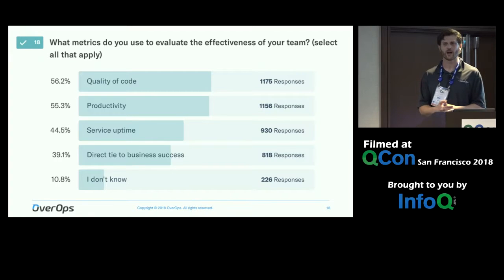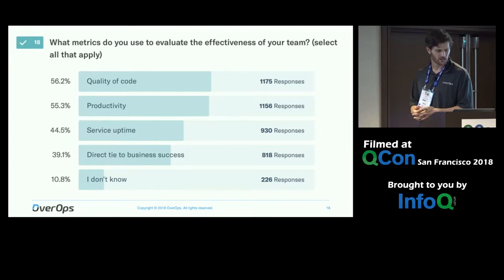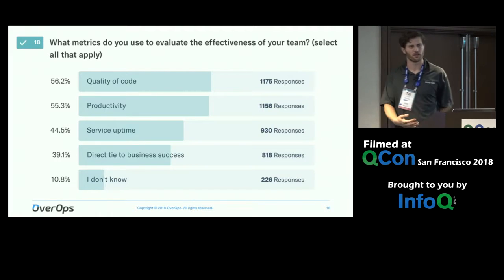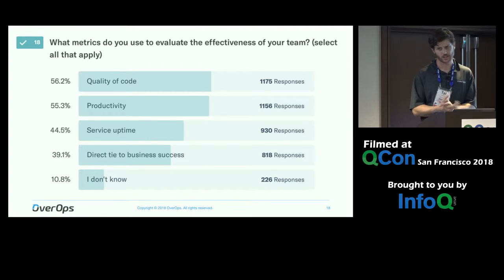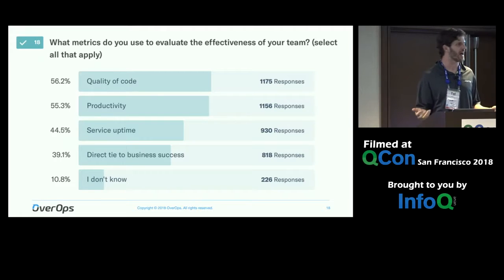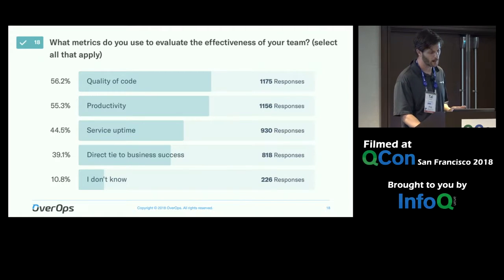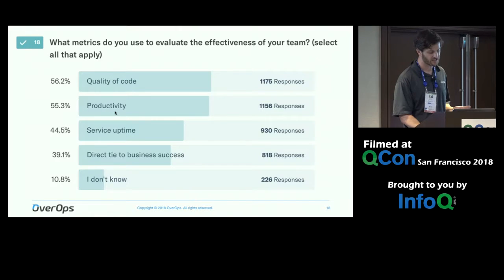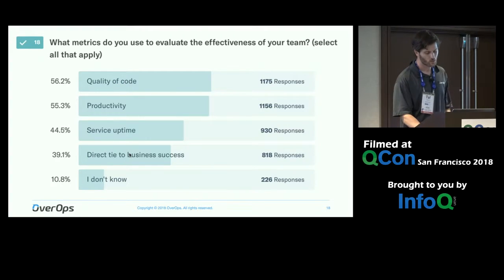How do you evaluate the effectiveness of your team? Quality of code seems to be the main thing — productivity, service uptime. That's going to be our segue into the next portion. Interestingly, it's not revenue or customer satisfaction or direct business success — it's quality of code and productivity that teams are tracking as their core effectiveness metrics.